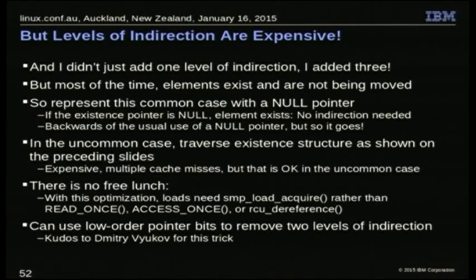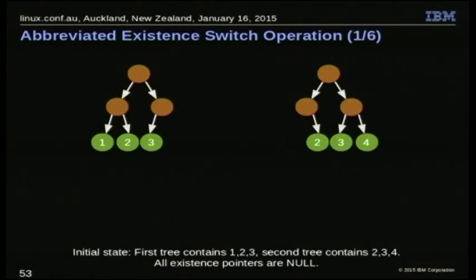We can reduce the levels of indirection from three to one using a trick Dmitry Vukov pointed out: use the lower bits of the pointer coming out of the data structure to store the offset, and put the bits directly in the switch instead of a pointer to an array. That gives you one level of indirection. Of course that means giving up the lower bits of your pointer — pick your poison. Dave noted that trick is used all over the place in the kernel anyway.